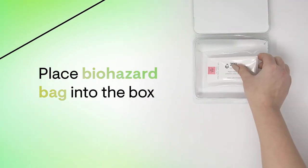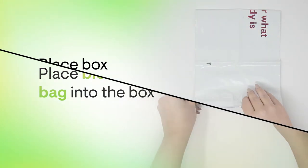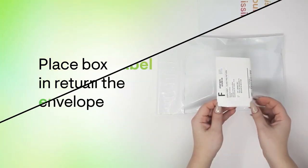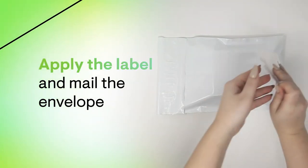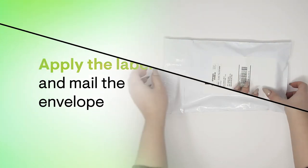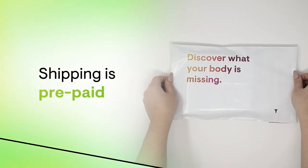When you're ready to return the samples, place the biohazard bag into the plastic box. Seal the box and place it in the provided return envelope. Apply the return label and drop the envelope into your mailbox or take it to a USPS Dropbox or post office. Shipping is prepaid, so your sample should be on its way to the lab as soon as it's picked up.